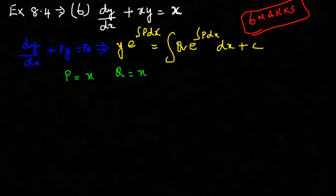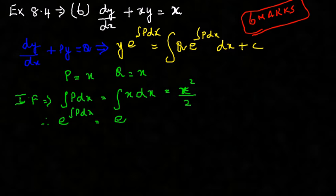Let us find the IF first. IF is the integrating factor which is e power integral p dx. Integral p dx is equal to integral x dx, and when you integrate x you get x squared by 2. Therefore, e power integral p dx is e power x squared by 2.